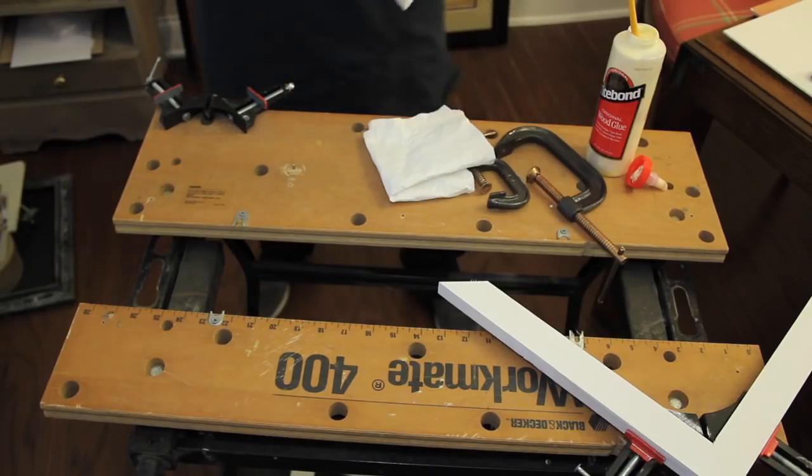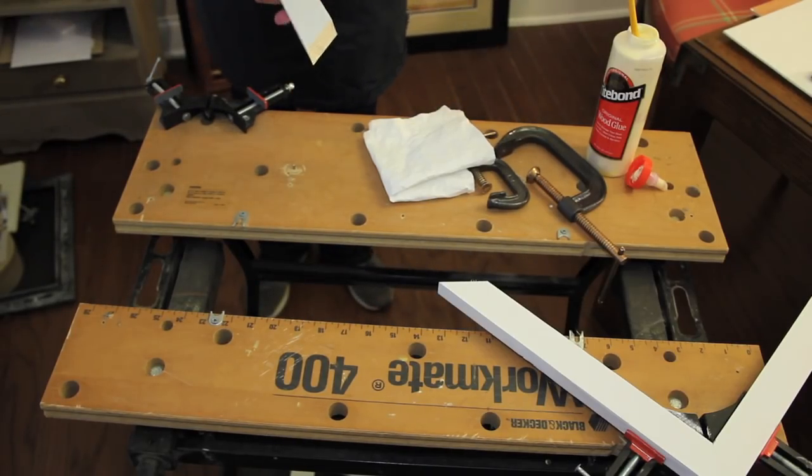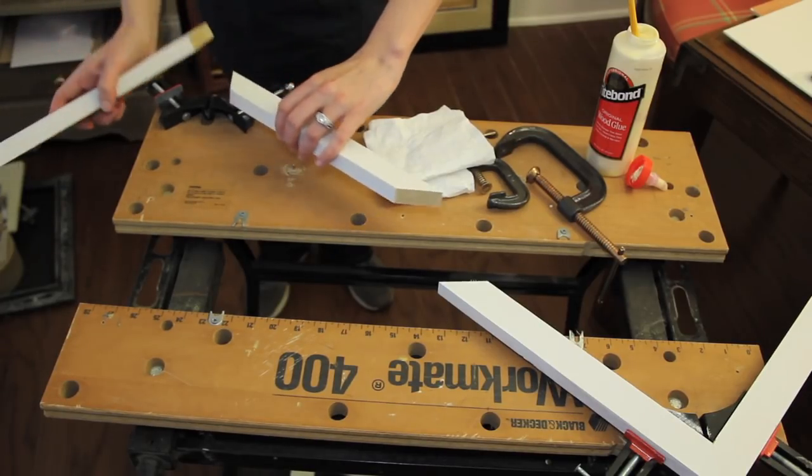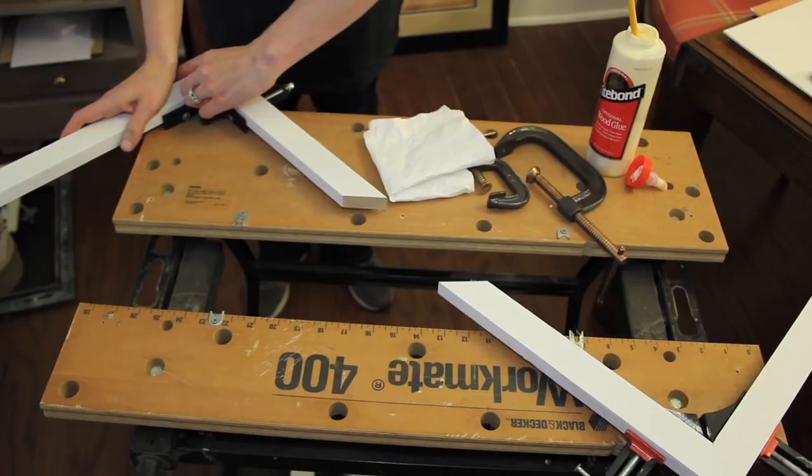You're going to want to take them over to your vice grips. Now once you have your molding pieces cut to your 45 degree angles and you want them secure, you put both pieces in the vice grip.